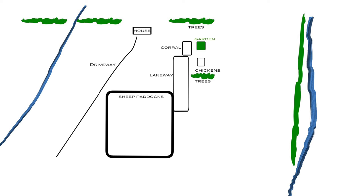Our homestead is on 10 acres. This is an overview of our western 5 acres. The left blue line represents a small valley that fills with water after heavy rain events and the spring thaw from snowmelt. The right blue line represents a seasonal creek.